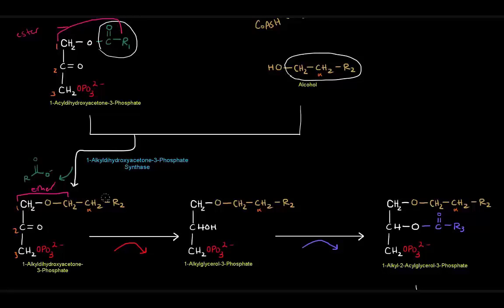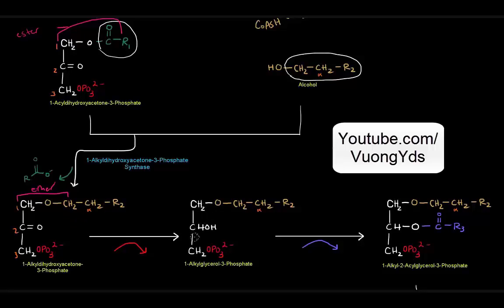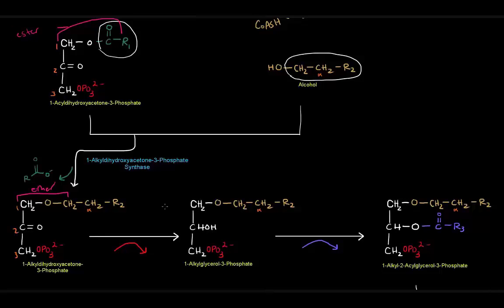So once we have that, we have that alkyl group at carbon number one. What's going to happen is that we're going to convert this molecule to this molecule over here, and the difference between these two, this new molecule is 1-alkyl glycerol 3-phosphate. The difference between these two is basically at carbon number two. Carbon one and three, they're the same. Carbon two, there's an alcohol instead of a carbonyl, so that's a reduction.